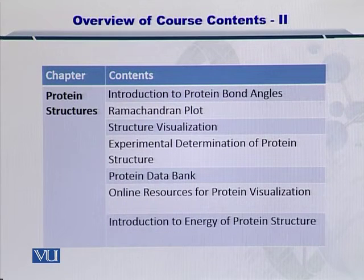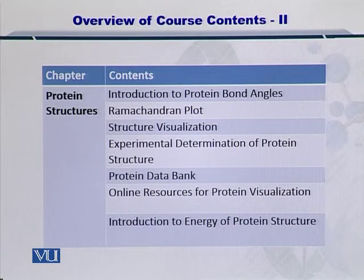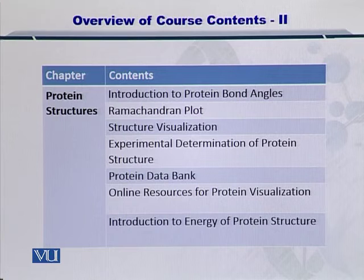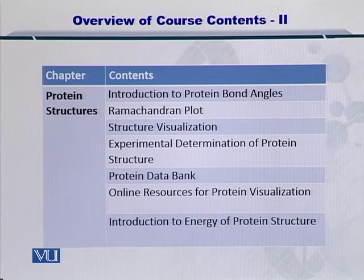Next, we'll see the bond angles within completely folded proteins and how the Ramachandran plot is helpful in that. This will be followed by structural visualization, and we'll also see how we can determine protein structure using experimental methods. Then we'll move to the Protein Data Bank (PDB) and see how experimental and predicted structures can be stored online in databases, along with several online resources for protein visualization, and then start on the calculation of energy for protein structures.